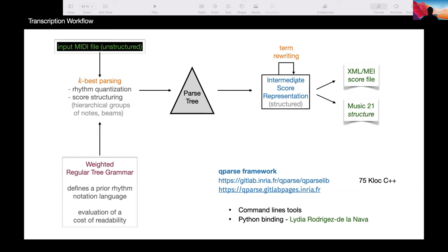And then we obtain from this parse tree an intermediate score representation and we do some post-processing. The idea is that we use a tree structure in order to represent hierarchies of note groups in the score, in particular for representing the rhythm notation, which is very important for the drums. This was implemented in an existing framework called QParse for transcription.